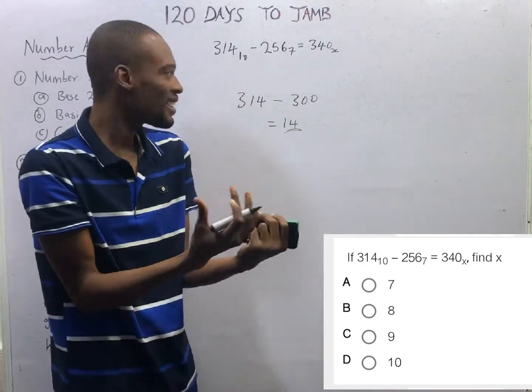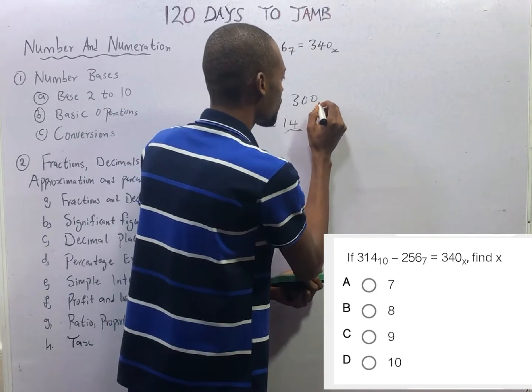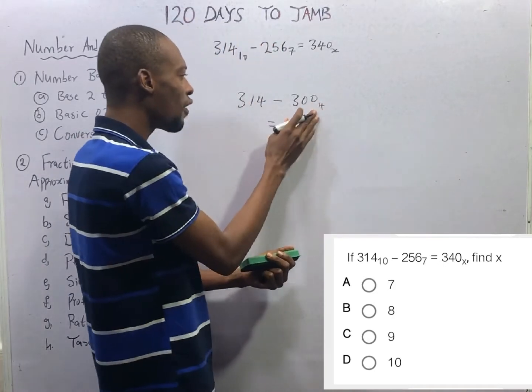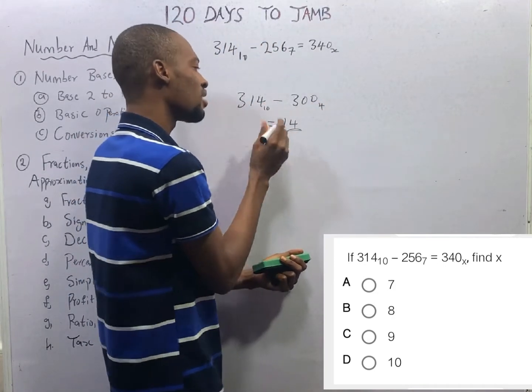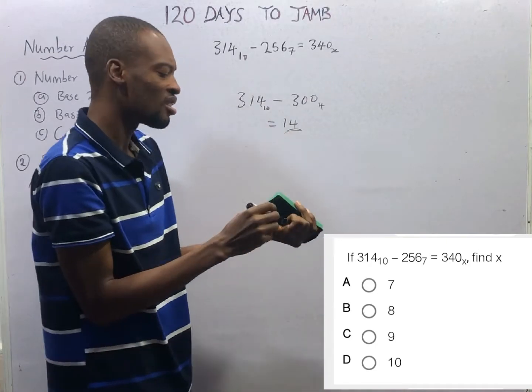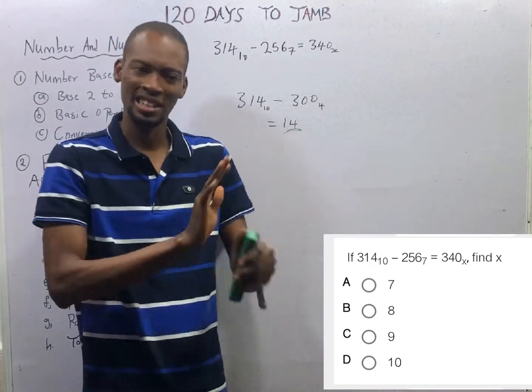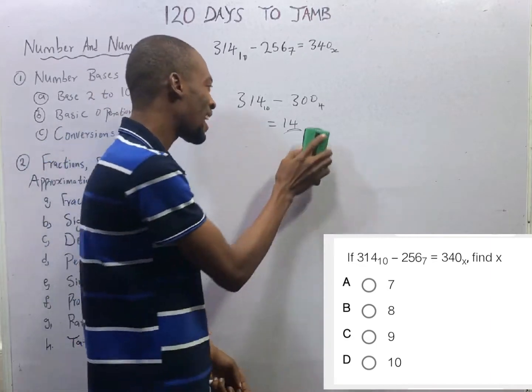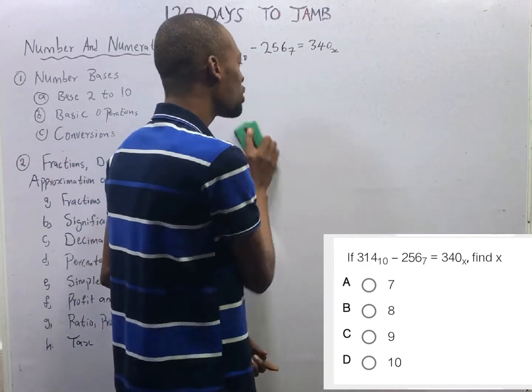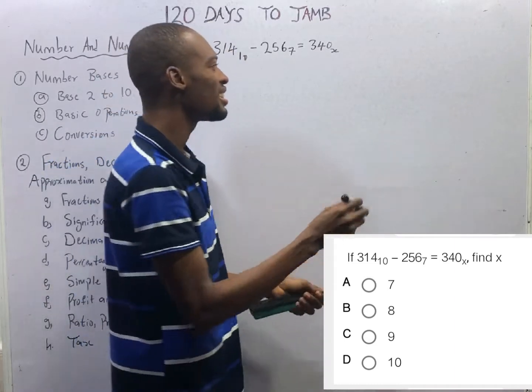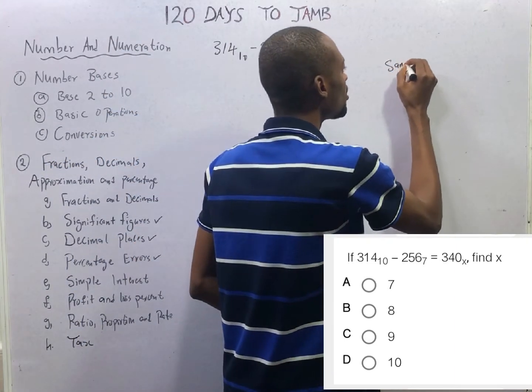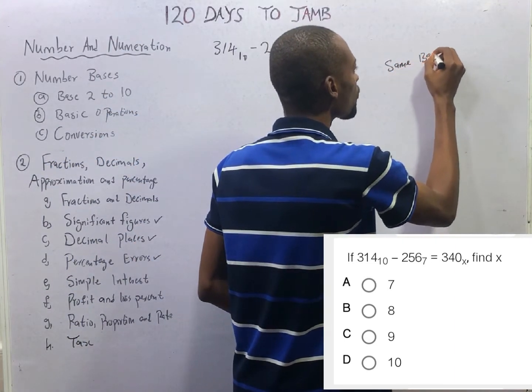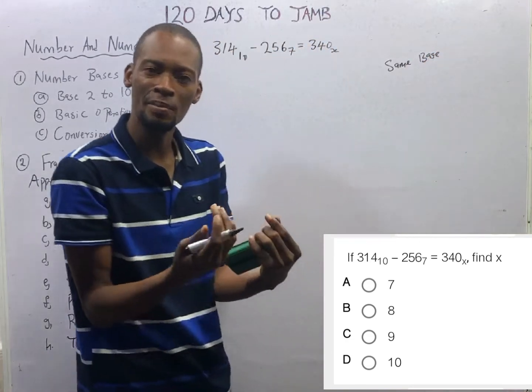In a situation where this is base 4 and this is base 10, or any other base, you cannot subtract, add, divide, or multiply. For this to happen, for you to add, divide, or multiply numbers, they must be in the same base. That is number system for you.